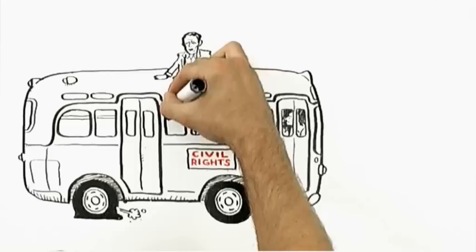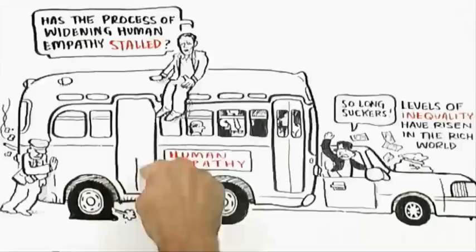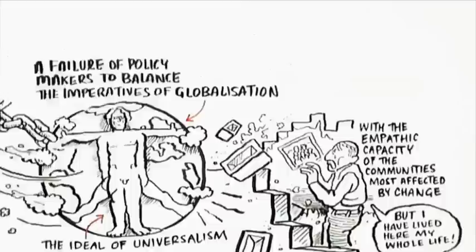There are reasons to ask whether the process of widening human empathy has stalled, and at just the time when we need it to accelerate. After four decades of post-war progress, levels of inequality have risen in the rich world. Tensions between different ethnic groups persist and have taken on new dimensions. Anti-immigrant sentiment has grown, arguably reflecting a failure by policymakers to balance the imperatives of globalization and the ideal of universalism with the empathic capacity of the communities most affected by change.